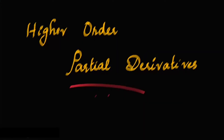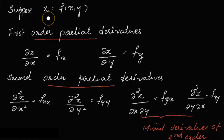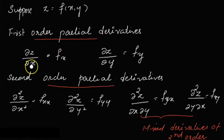Hi all, today's topic is higher-order partial derivatives. In the last class, we discussed how to find first-order partial derivatives of a two-variable function. Suppose z is equal to f of xy. The first-order partial derivatives are dou z by dou x and dou z by dou y. We also denote them as fx and fy.